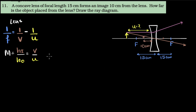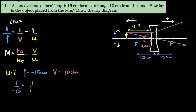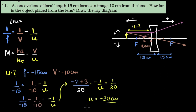Before substituting, I choose the right side as positive, left side as negative, upwards as positive, and downwards as negative for height. U is not given — we need to find it. The focal length is 15 centimeters, but from the ray diagram, the relevant focus is on the left side, so F is minus 15 centimeters. V is 10 centimeters from the lens but is on the left side, so V is minus 10 centimeters. Plugging in: one over minus 15 equals one over minus 10 minus one over U. Simplifying, we get U to be minus 30 centimeters.